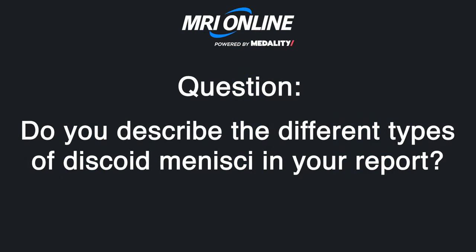Do you describe the types of discoid meniscus in your report? I don't really know the definitive different types, to be totally honest. I do look for the Risberg variant — which I've only seen in textbooks — to see if you have those attachments, the meniscal struts. I'll describe how big the meniscus is: if it's going all the way to the notch I'll note that, and if it's borderline discoid I'll say that too. I also think it's important to describe any tear or intrasubstance degenerative signal, because I think of those as micro-tears making it more prone to tearing.